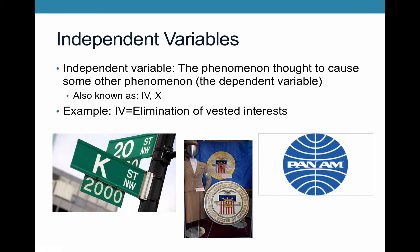The independent variables are our explanation. The independent variable is the phenomenon thought to cause the other phenomenon — so this is the cause behind the outcome. We write the independent variable sometimes as IV, or also as X. This is simply the thing that's causing our outcome of interest.